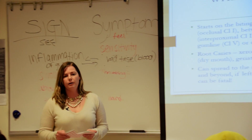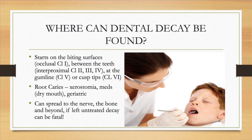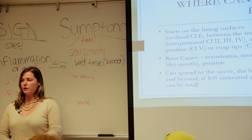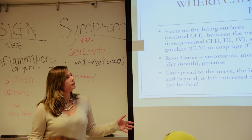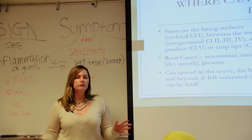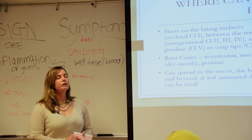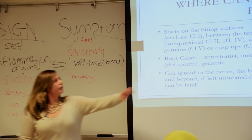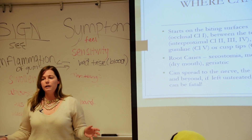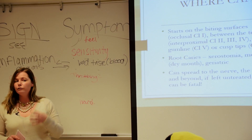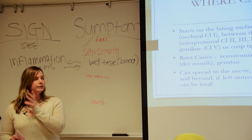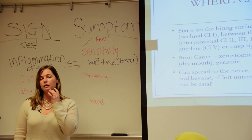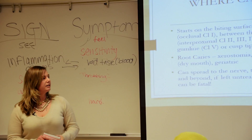Where can dental decay be found? You'll learn GV Black's classifications for restorations later. Cavities can be found on the biting or occlusal surfaces — those are Class 1. In between the teeth — Class 2 for back teeth, Class 3 and 4 for front teeth. At the gum line is Class 5, and on the cusp tip is Class 6.